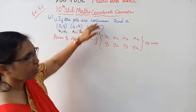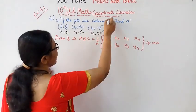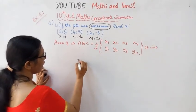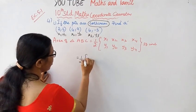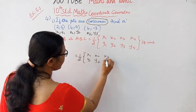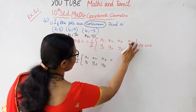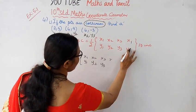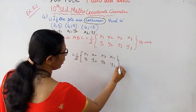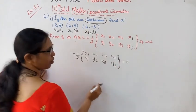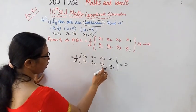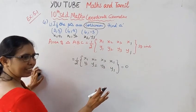If the points are collinear, now we will get the points. Points are collinear. Now, using the area of triangle formula: half into x1, y1, x2, y2, x3, y3. If the points are collinear, then x1(y2 - y3) + x2(y3 - y1) + x3(y1 - y2) is equal to 0.